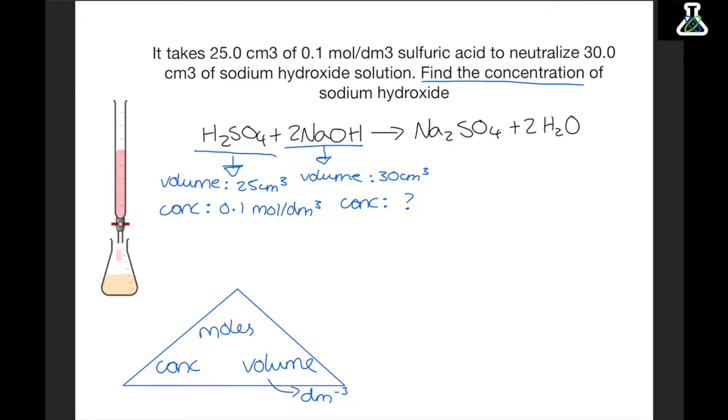The first thing we are going to do is find out how many moles of sulphuric acid we have. So to do this we need to times the concentration by the volume. So we want to do 0.1 times the volume. Now the volume given is 25 cm3. But we need the volume in decimetre cubed. So we need to divide it by 1000. So we will end up with 0.025. And if you times these together we get 0.0025 moles. So that's how many moles of sulphuric acid we have.